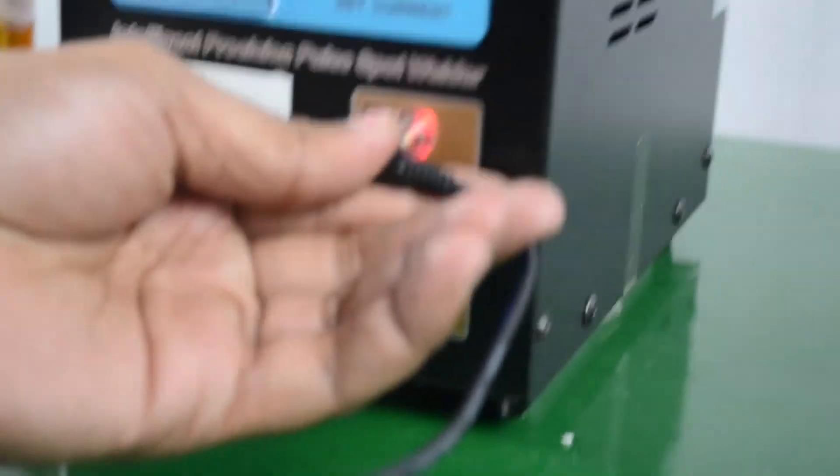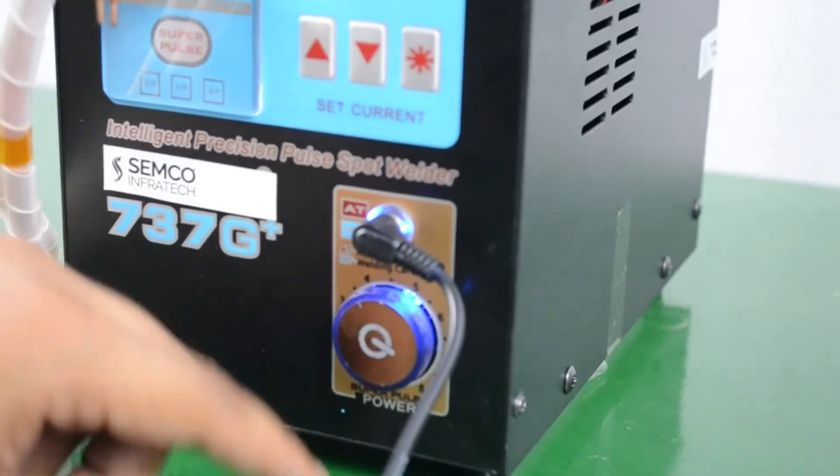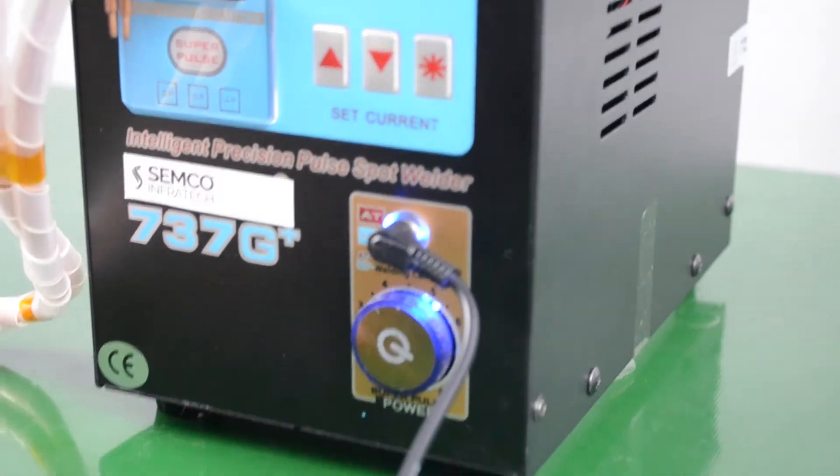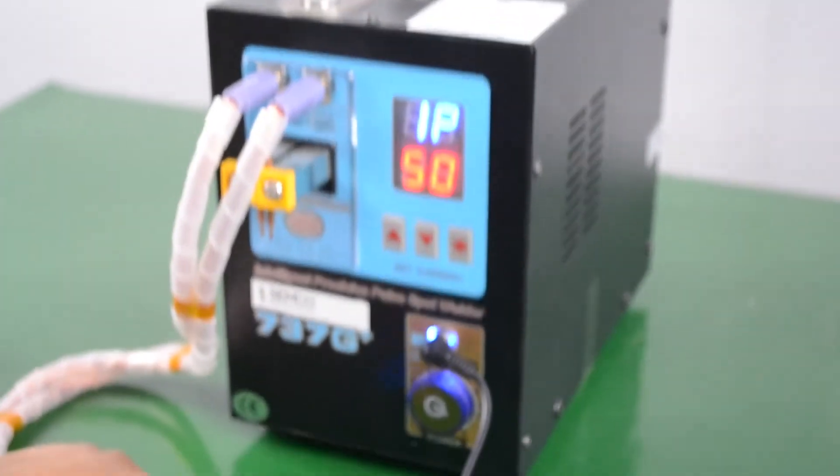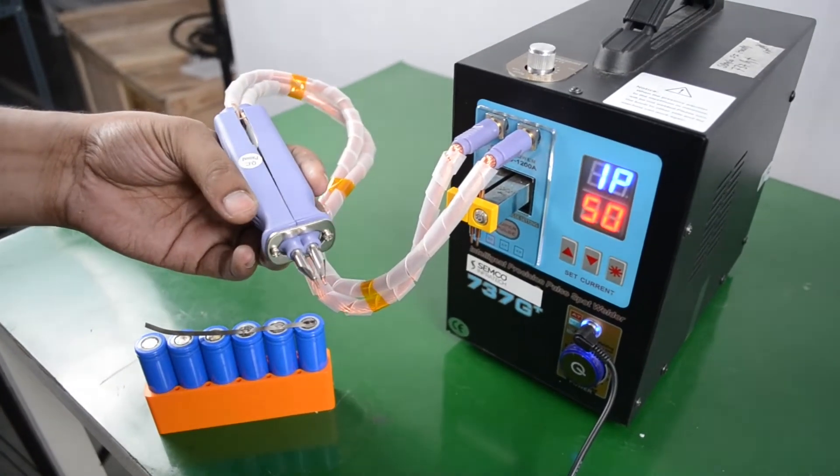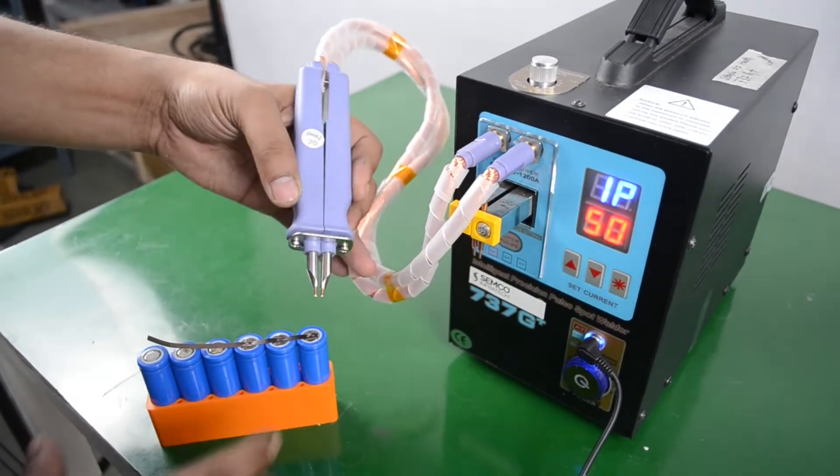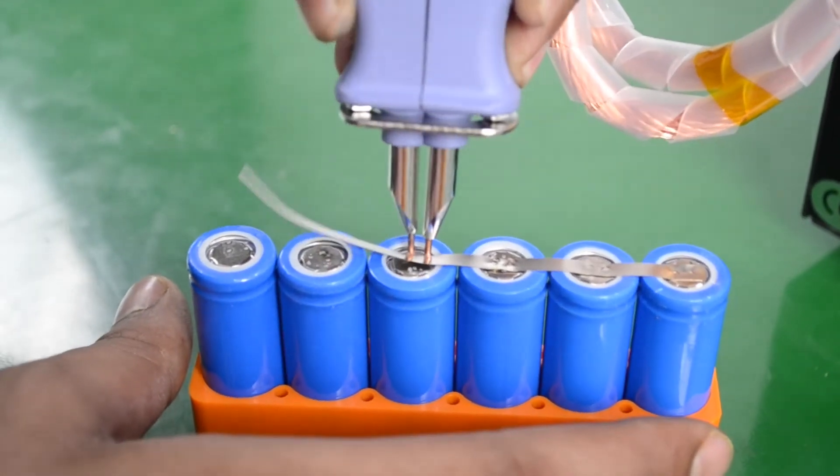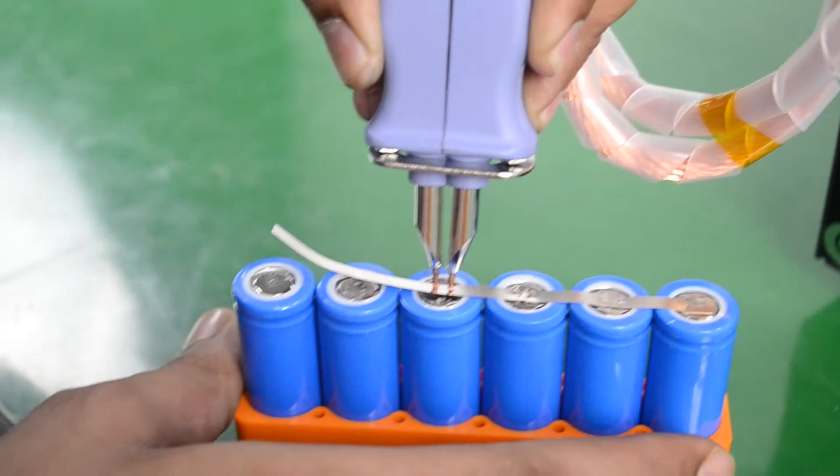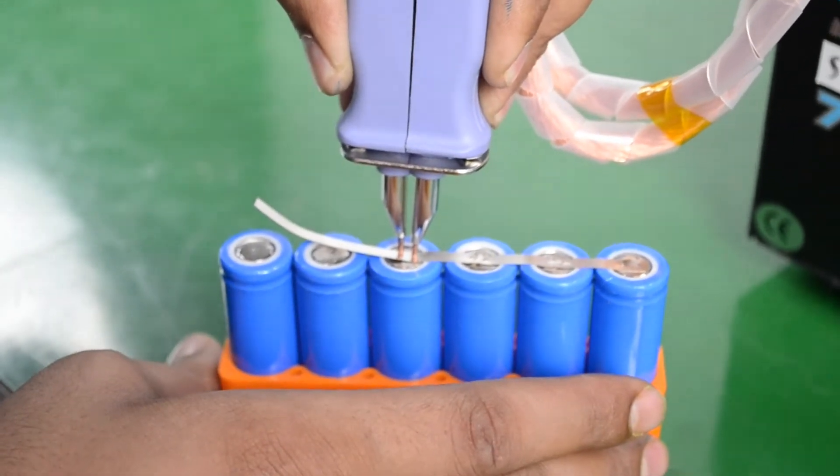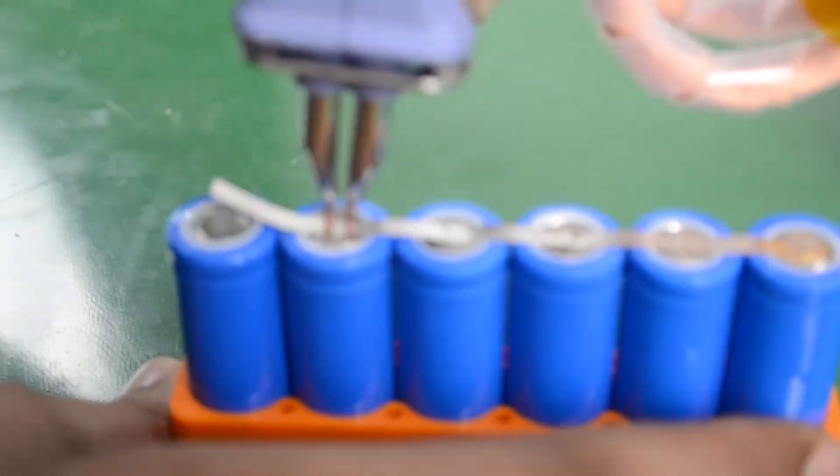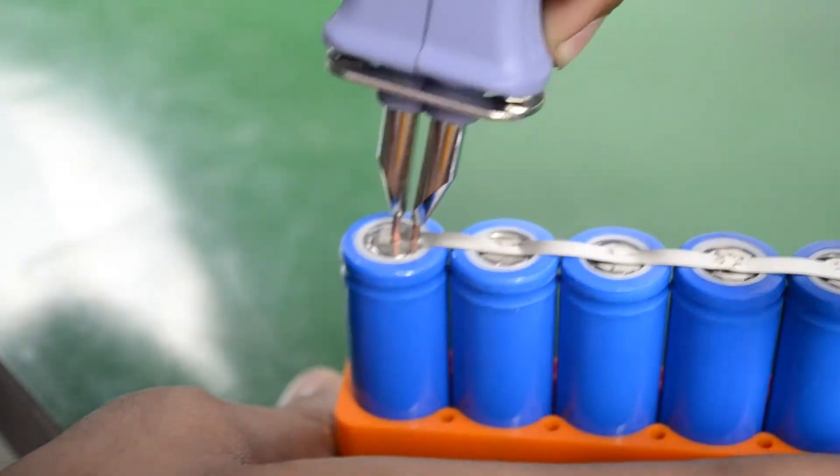Currently we are going to work in automatic mode, so we need to connect this probe. Now let's weld some battery packs. This is our welding pen - you can see that we have two electrodes for good welding. We just need to put this here and push down, then trigger the pedal like this. Now see how good it's welding.